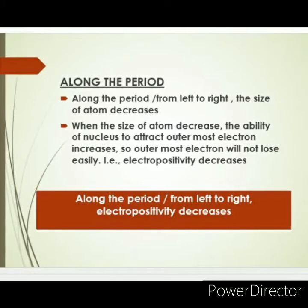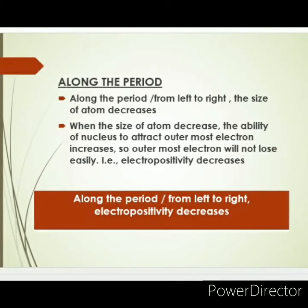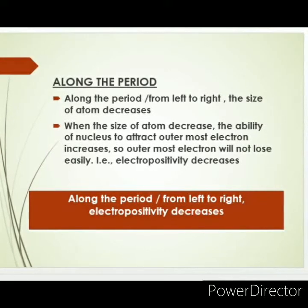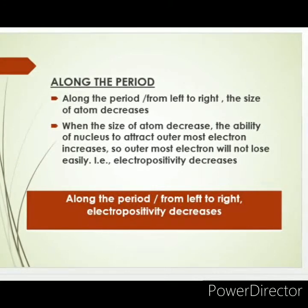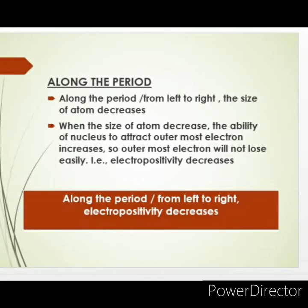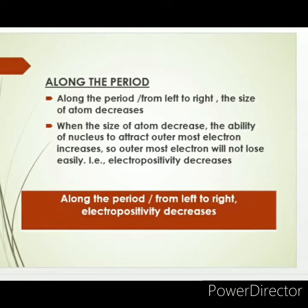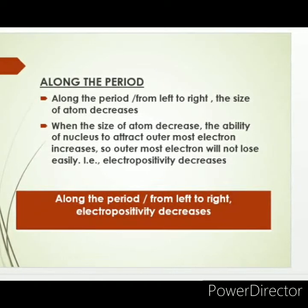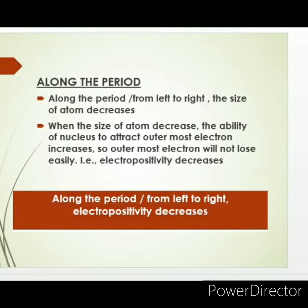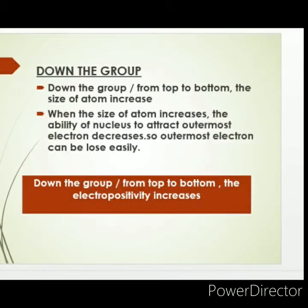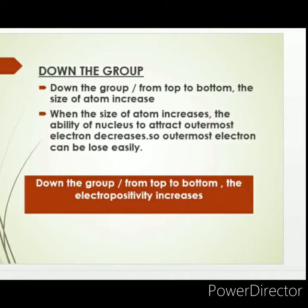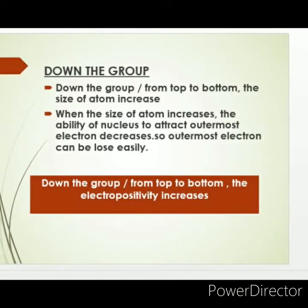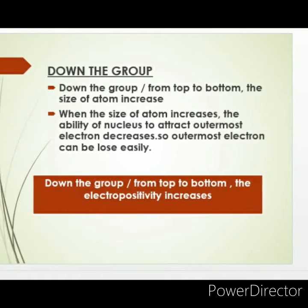Our concern is what happens to electropositivity if you move from left to right along the period. Electropositivity decreases. Why? As already discussed, it depends on atomic size. When the size of an atom decreases, the ability of the nucleus to attract the outermost electron increases, so the outermost electron will not be lost easily. That means electropositivity decreases. We can conclude that along the period, from left to right, electropositivity decreases.